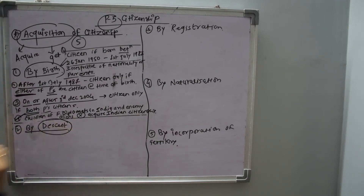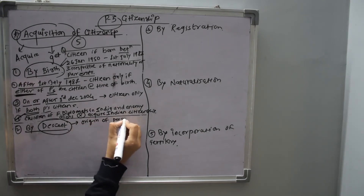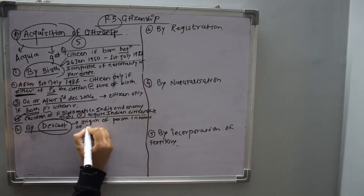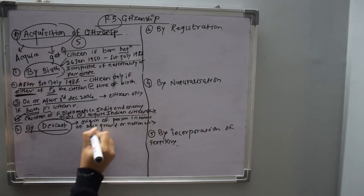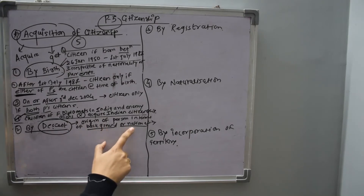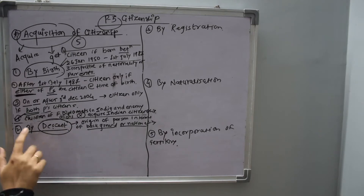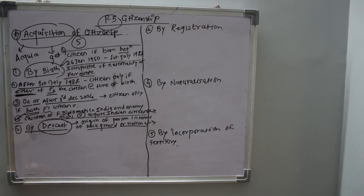Now by descent. Descent means origin of a person in terms of background or nationality — how can you gain Indian citizenship by background or nationality? A person born outside India on or after 26th January 1950 but before 10th December 1992 is a citizen by descent if his father was a citizen of India at the time of his birth.